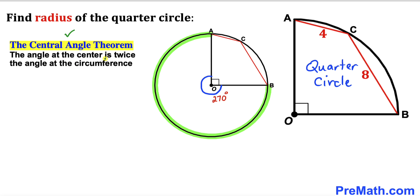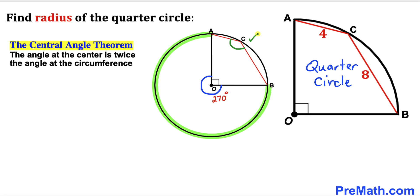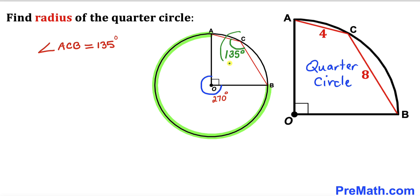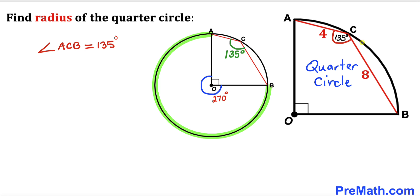Now let's recall the central angle theorem: the angle at the center is twice the angle at the circumference. For the subtended arc, the angle at the center is 270 degrees, so the angle at the circumference is half of that, which is 135 degrees. Therefore angle ACB in this quarter circle is 135 degrees.